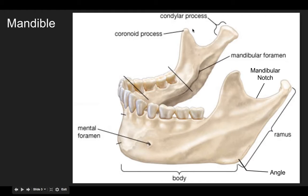The coronoid process is where the temporalis muscle attaches. And then over here, the condylar process — it is a literal condyle, and it holds the jaw where it articulates or moves.